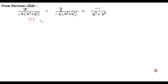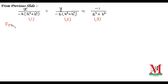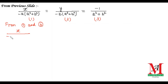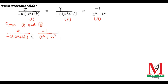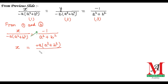Moving to the next step, we take part one and part three to solve for x. We have x over minus a(a² plus b²) equals minus 1 over (a² plus b²). On multiplication, x equals minus times minus, which is plus 1, times a, and (a² plus b²) in the numerator cancels with (a² plus b²) in the denominator. So the value of x is a.